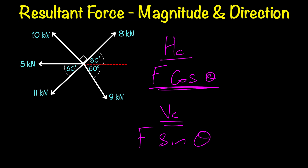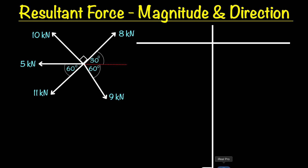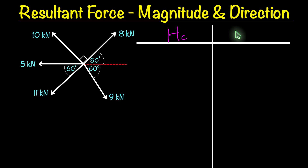I'm going to start by setting out our table for our force components — HC for all our horizontal force components and VC for all our vertical force components. This is the reflex angle method, and how we're going to do it is we're going to measure all our angles from this reference line right here — that red dotted line — that's where we're going to measure all our angles from.